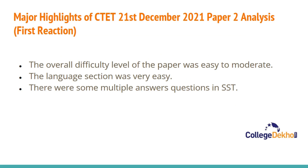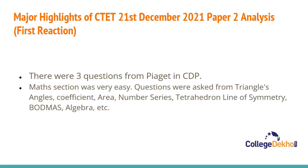Let us look at the major highlights for CTET 21st December 2021 Paper 2 analysis. As per the students' reaction, the overall difficulty level of the paper was easy to moderate. The language section was very easy, and there were some multiple-answer questions in Social Studies, meaning one question had multiple correct answers. There were three questions from Pedagogy in CDP.